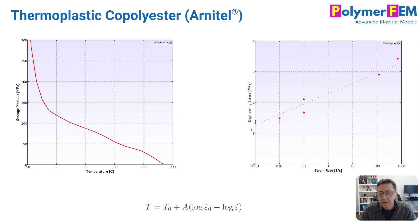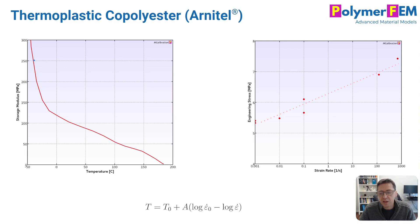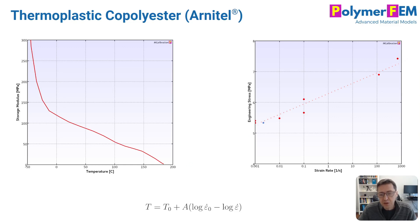Now let's revisit Arnitel. I showed that its stress versus strain rate is linear in the tested range. If I plot the DMA temperature sweep — storage modulus versus temperature — it looks very linear and smooth in that range. But if you look at even lower temperatures, there is a drastic upturn in the storage modulus. This suggests that at even higher strain rates, Arnitel should also show a bilinear response, detectable simply by looking at the DMA data.